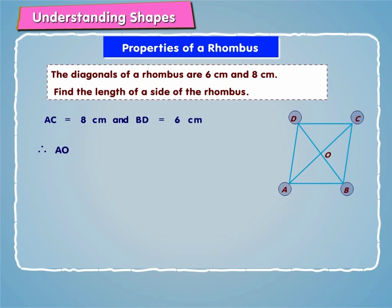Therefore, AO is equal to 1 by 2 into 8 cm is equal to 4 cm and BO is equal to 1 by 2 into 6 cm is equal to 3 cm.